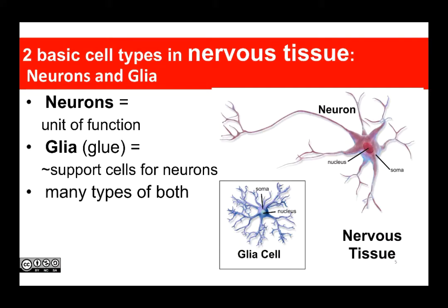As we learned last week, there are two basic kinds of cells in nervous tissue: neurons and glia. Neurons are the unit of function in the nervous system, and glia — which means glue — provide a variety of different kinds of support for neurons. There are many types of both neurons and glia. We're going to focus on three kinds of neurons and essentially six kinds of glia.